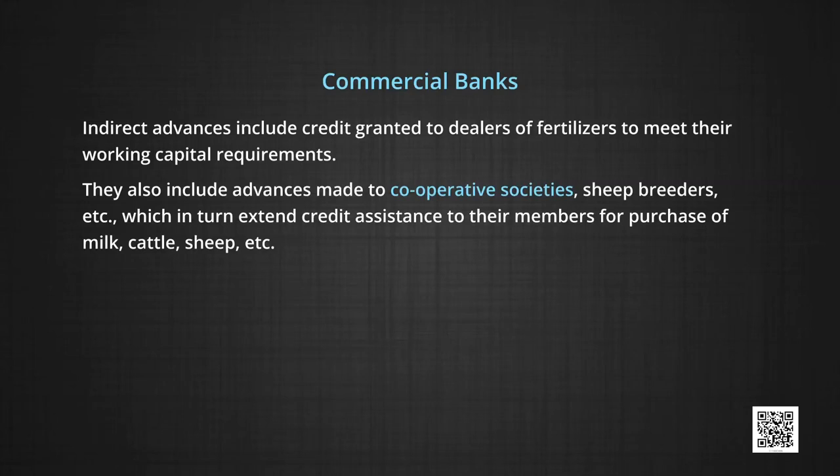Indirect advances also include advances to sheep breeders, etc., which in turn extend credit assistance to their members for purchase of milk, cattle, sheep, etc. The cost of operating agricultural advances is very high and huge losses are incurred in opening and operating rural branches. Regional managers are reluctant to provide agricultural advances and lack initiative and interest in the agricultural sector. Central offices of banks are cut off from remote rural branches because of lack of communication and transport, resulting in inter-branch adjustments not being possible due to lack of reliable data.